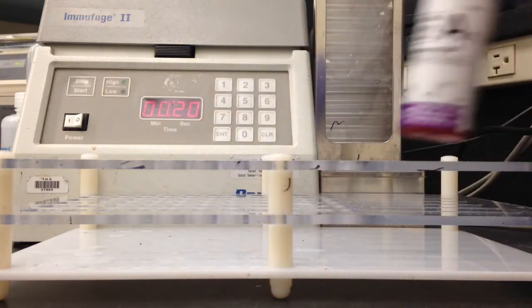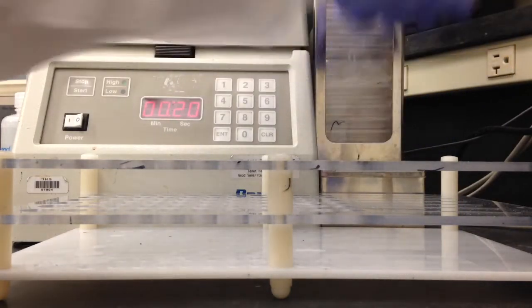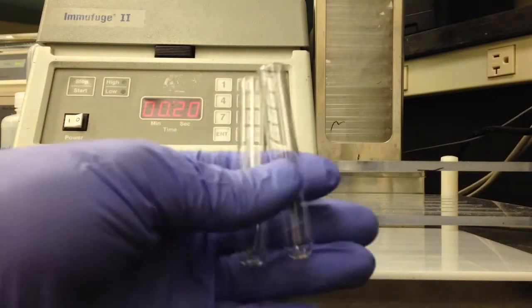You're going to need A2 cells for your negative control and A1 cells for positive control. Normally you'd be testing a specimen as well, but I don't have one so I'm just going to be doing the controls.